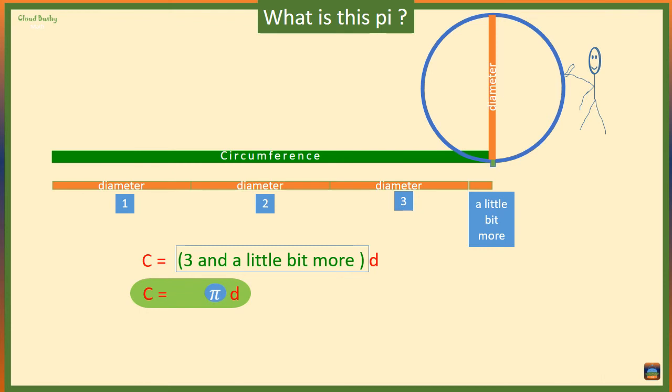We use this formula to find the circumference of a circle. Now we have the formula C is equal to pi d. If we divide both sides by d, we end up with the ratio C over d is equals to pi.